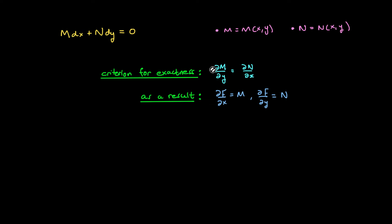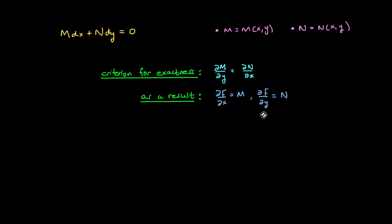That is, the partial derivative of M with respect to y must equal the partial derivative of N with respect to x. And if this relationship is an identity, as a result, it implies that there exists a function f of x and y such that df/dx is equal to M, and df/dy is equal to N.